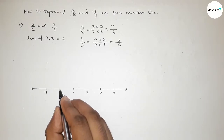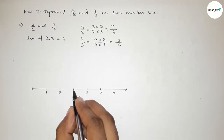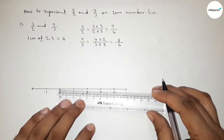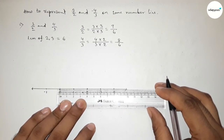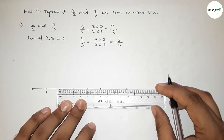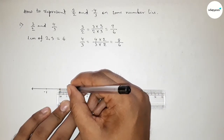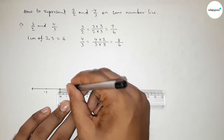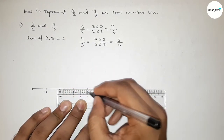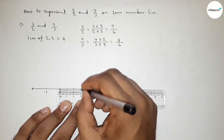Now we have to represent the fractions 9 over 6 and 8 over 6 on the number line. First, divide the distance between any two numbers into two equal parts. Taking the half between zero and 1, and then taking the half between 1 and 2.